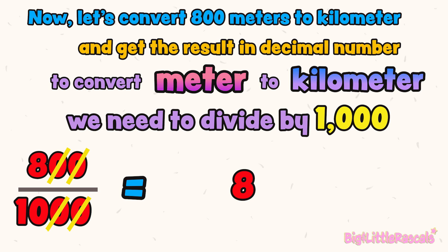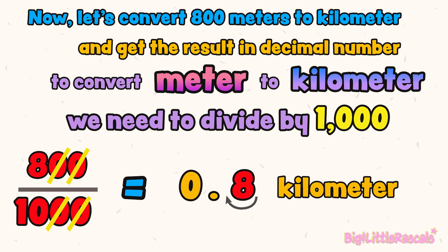Now let's put the number 8 first after the equal sign. Because there is still one zero left at the bottom, we need to jump one time to the left. Add the decimal point after that and add zero at the front. We get the decimal number as 0.8 kilometers. So, 800 meters equals 0.8 kilometers. Great job!